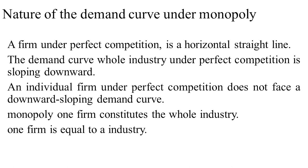The downward sloping demand curve of the consumer faces the whole competitive industry. An individual firm under perfect competition does not face a downward sloping demand curve, but in the case of monopoly, one firm constitutes the whole industry. Therefore, the entire demand of the consumer for the product is represented by the monopoly firm. Since the demand curve of the consumer for a product is downward sloping, that is why the monopolist faces a downward sloping demand curve.